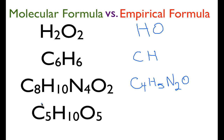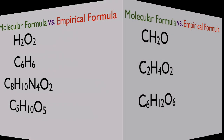Now we have the last one, which is ribose — a simple sugar, a monosaccharide. You can see we have 5, 10, and 5. All three of those are divisible by 5. So the empirical formula for ribose is simply CH₂O. Those are the empirical formulas for those compounds.